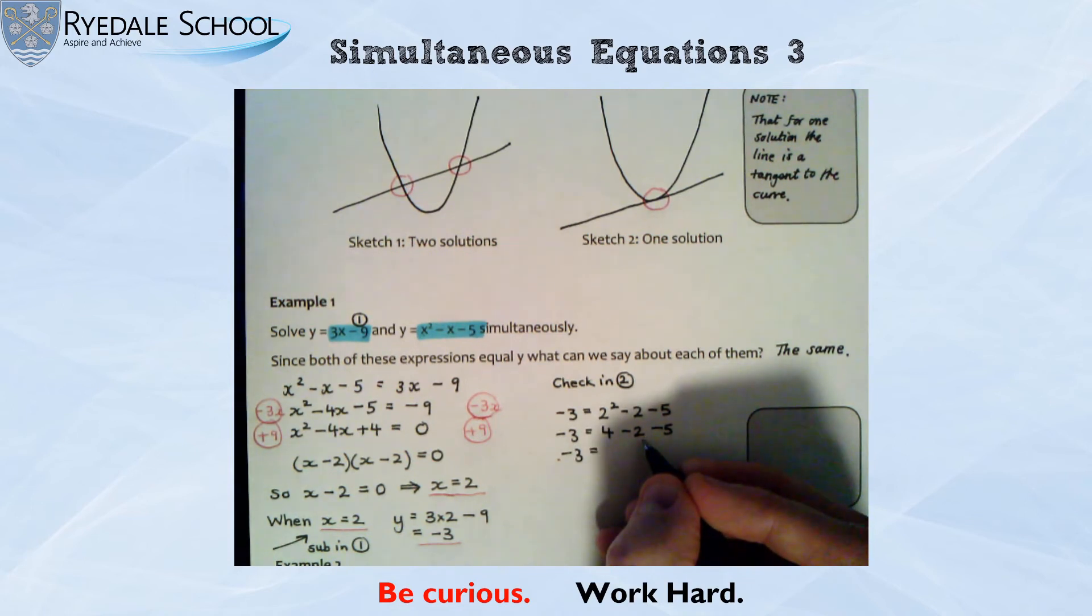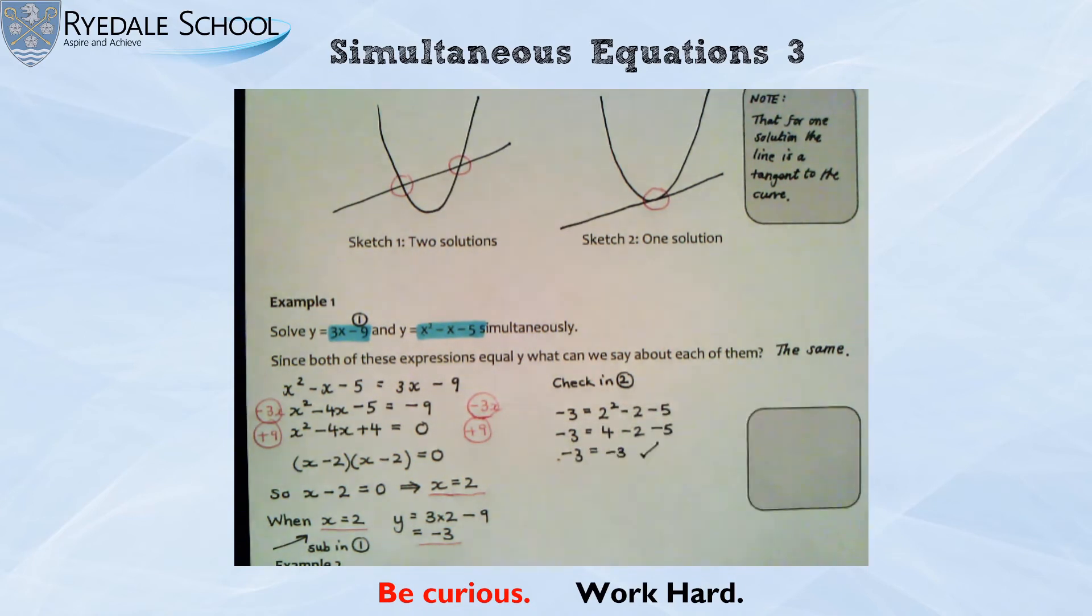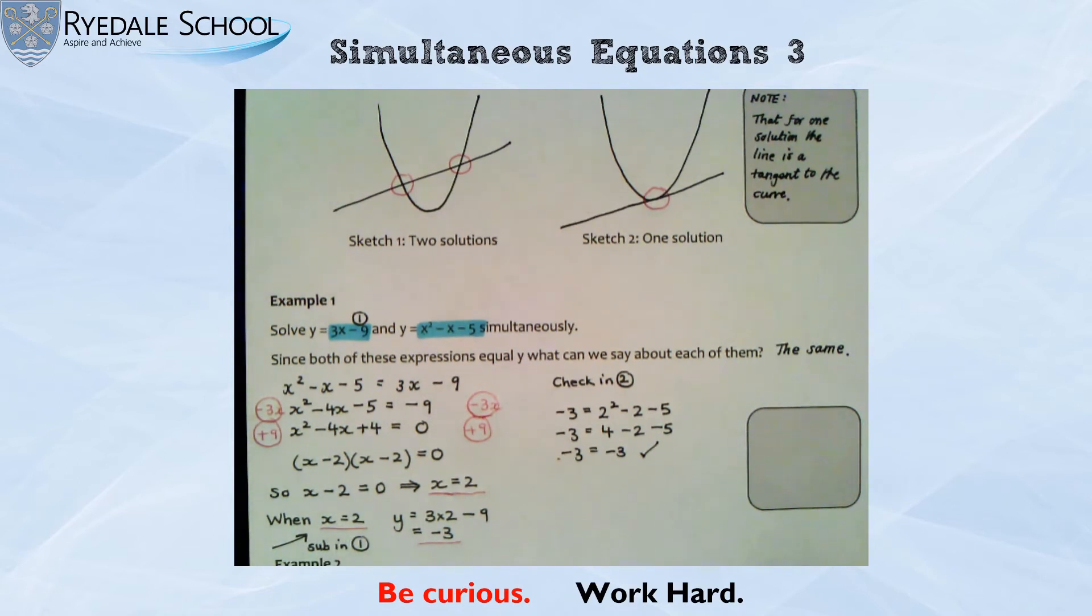Is 4. Take away 2. Take away 5. Minus 3. Minus 3 equals minus 3. So it has worked. So my answer for this one is x is 2 and y is minus 3.